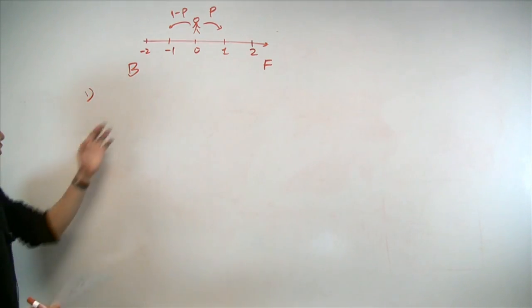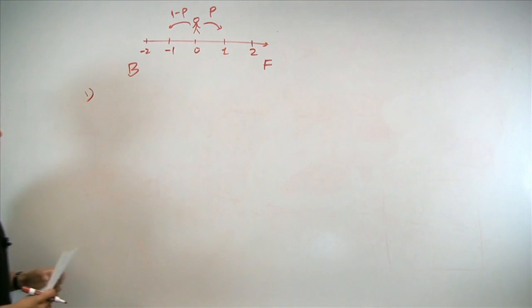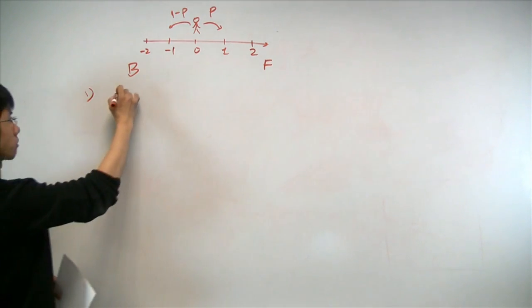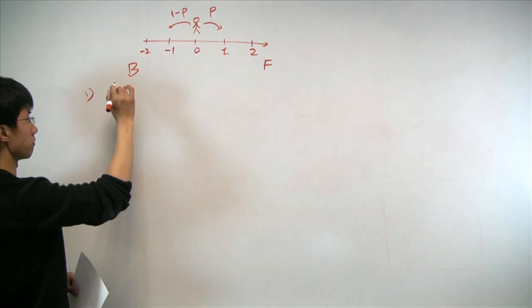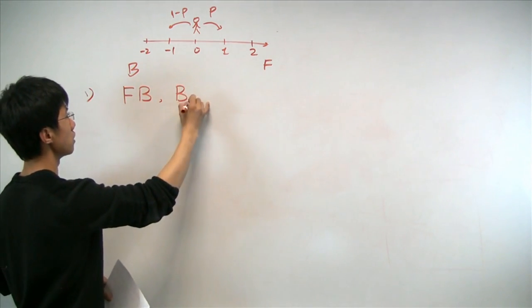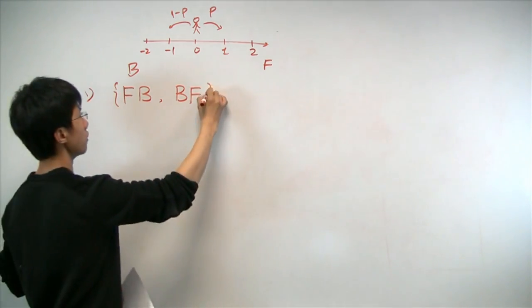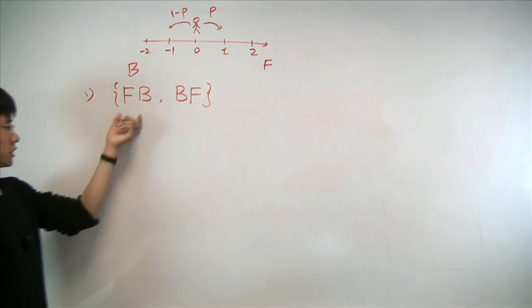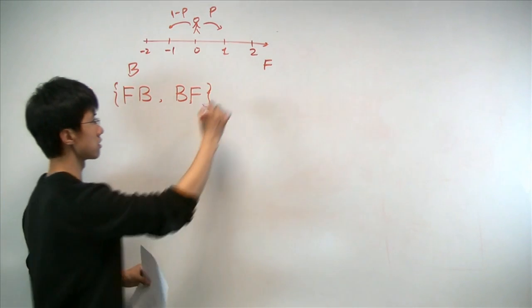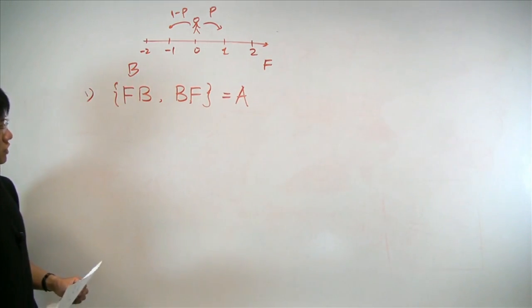So in order for the person to go somewhere after two steps and return to the origin, the following must happen. Either the person went forward, followed by backward, or backward, followed by forward. And indeed, this event, namely the union of these two possibilities, defines the event of interest in our case.